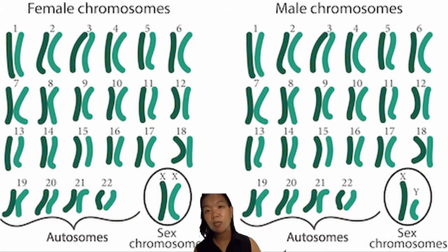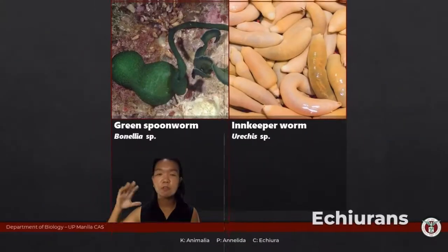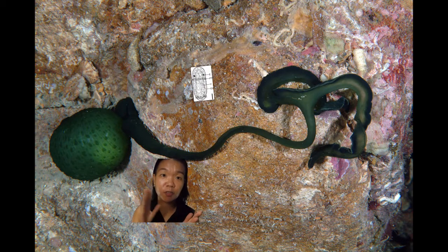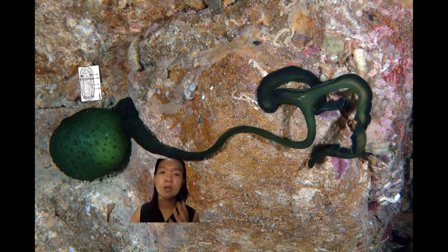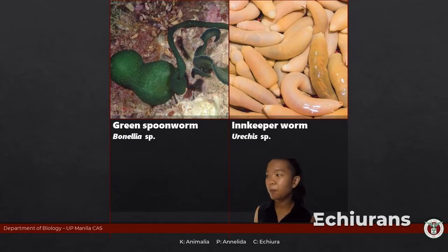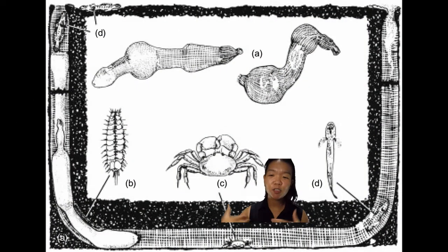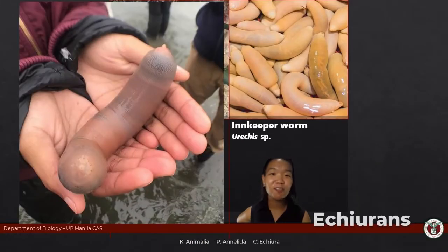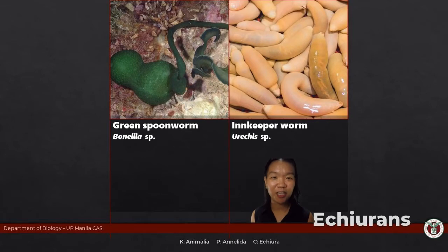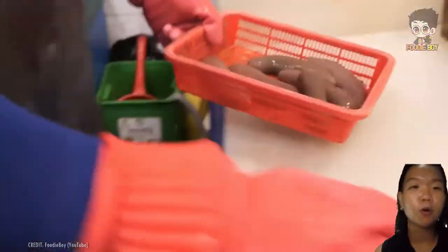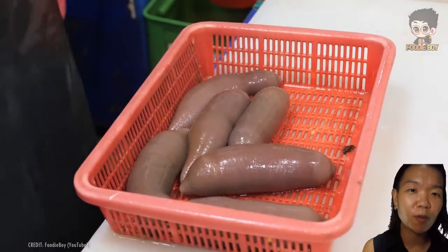Echiurans are an example of animals with environmental sex determination. In humans, sex is determined by genetics (XX or XY), but for these worms, the environment determines sex. Larvae that do not yet have a sex become male if they contact a female, and become female if they do not. They are called innkeeper worms because they share their burrow with many other organisms. They are also known as the penis fish — actually eaten as a delicacy in South Korea.